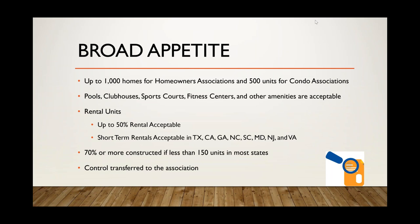We can now consider associations that are 70% or more constructed — previously we required 90%. We lowered this primarily to match our D&O story, where we require 70% of the units to be sold so that control of the board has been turned over to the association and they have enough members for a fair vote. This applies to associations less than 150 units when completely developed, and is available in most states.